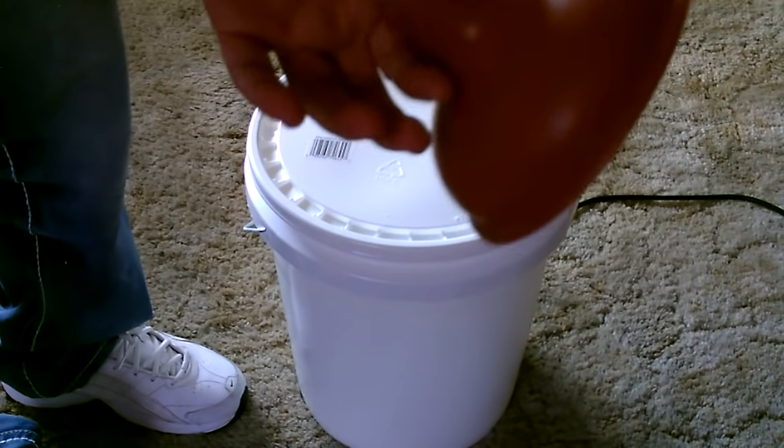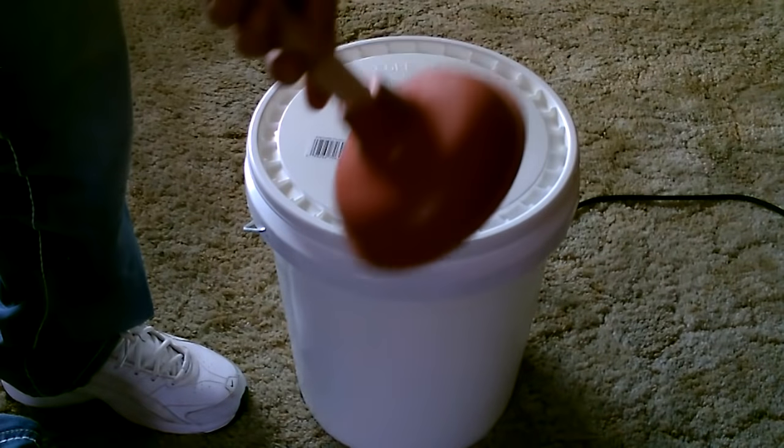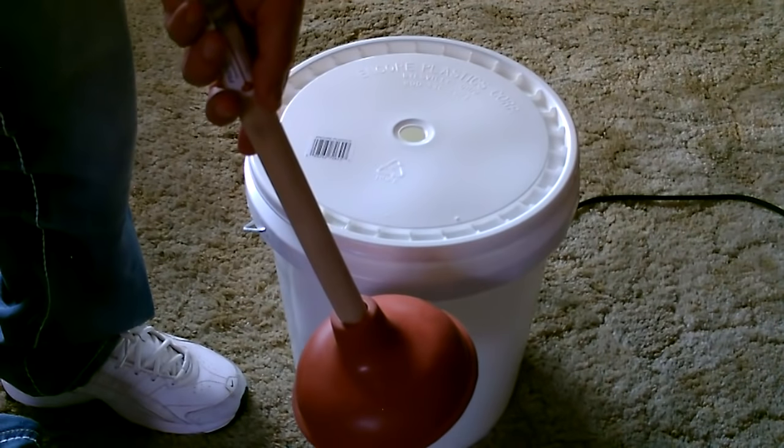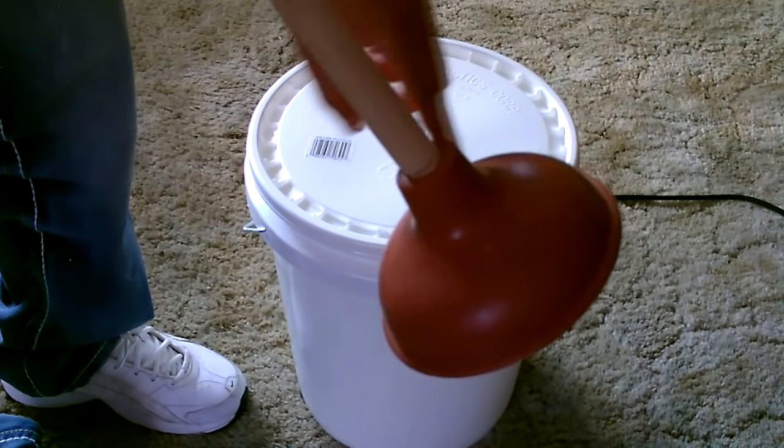Okay, the next thing we're going to do is drill some small holes in the plunger. If you use this in here without drilling holes, it won't really agitate the clothes properly. So you want to drill about eight small holes.